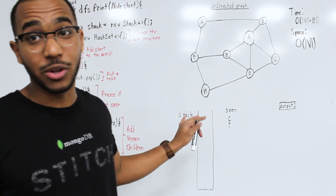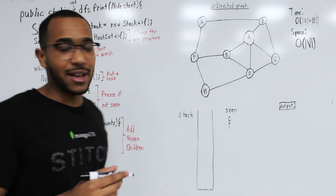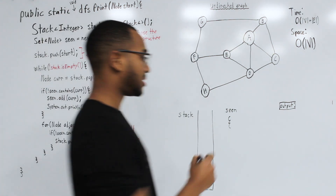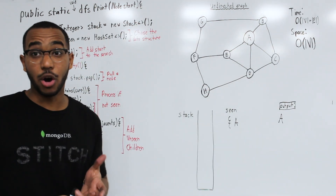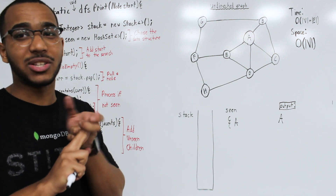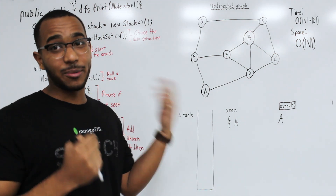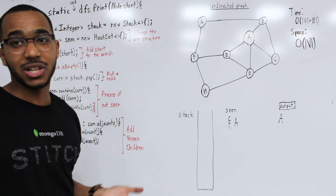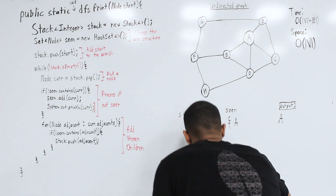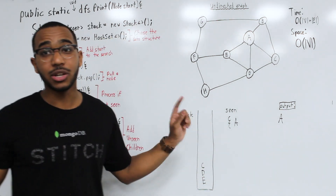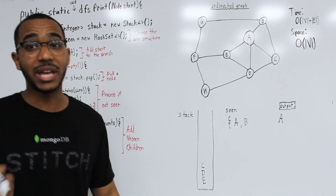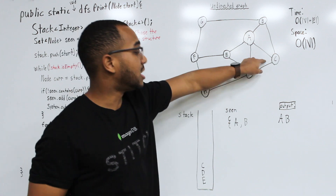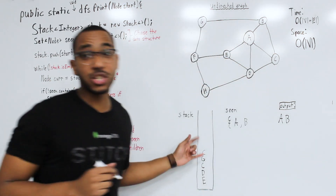Let's walk through an example starting at node A. We add A to the stack, pop A — has A been seen? No, so we add it to seen and print it. Now we add all of A's children: B, C, D, and E. We pop B from the stack — has B been seen? No, so we output it and add B's children. A has been seen; C and G have not, so we add them.